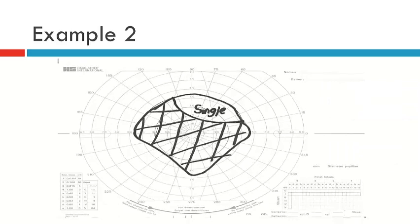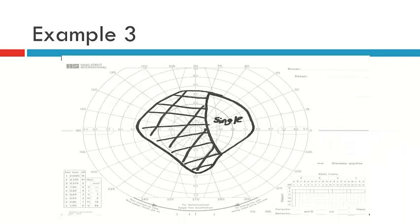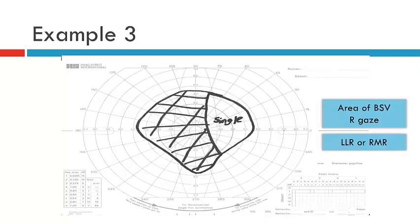Here we have a patient whose area of BSV is in dextro depression. We expect the affected muscle must be in the directly opposite position, which is laevo depression. In laevo depression, the two muscles that have their field of action there are the left inferior rectus and the right superior oblique — so one of these is likely to be the affected muscle. In this next example, the area of BSV is in right gaze, which indicates that the issue must be in left gaze. The two muscles utilised in left gaze are the left lateral rectus and the right medial rectus, so one of these is likely to be affected.